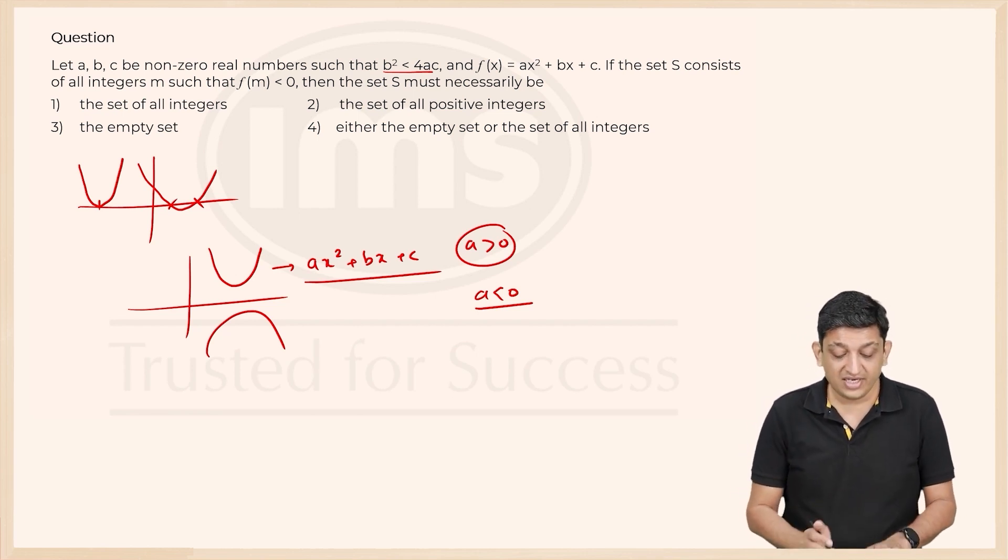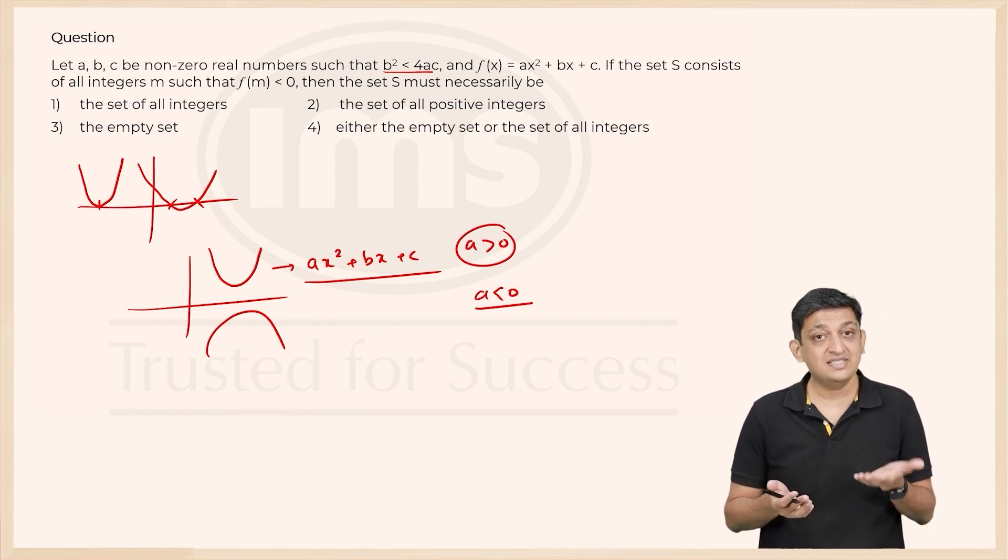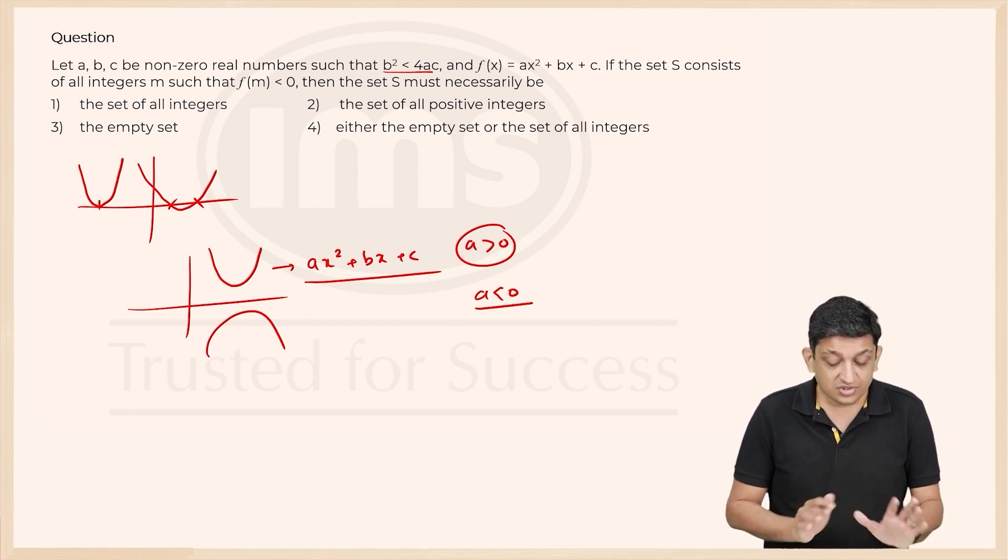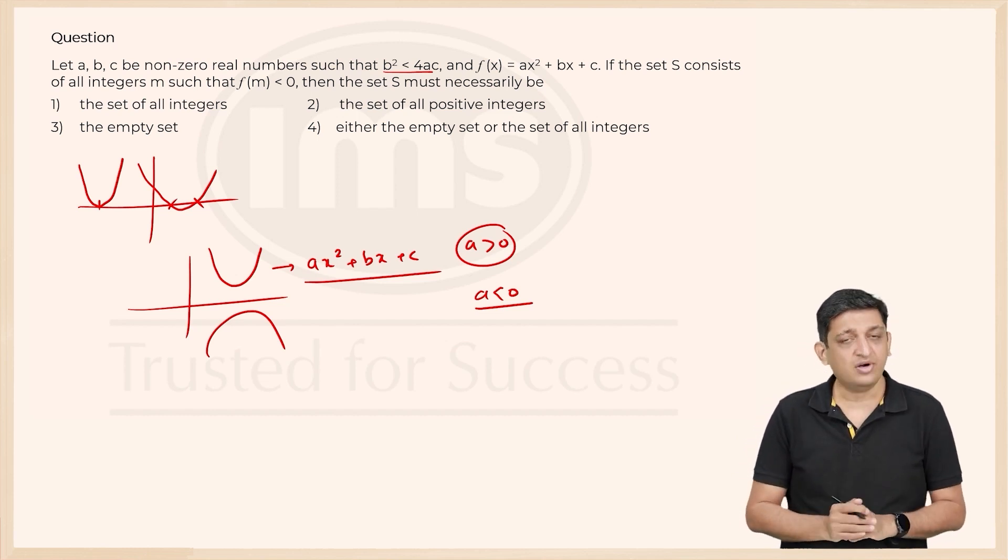So in that case, what you are going to get is we need to find all integers such that f(m) is less than 0. So the set S must necessarily be what, and that is basically the context that you have.